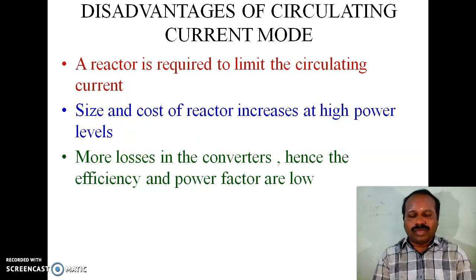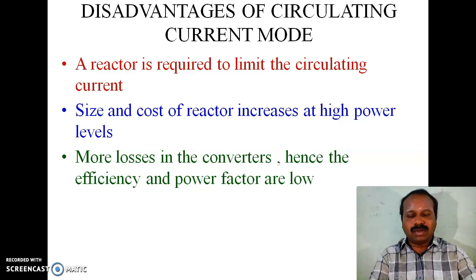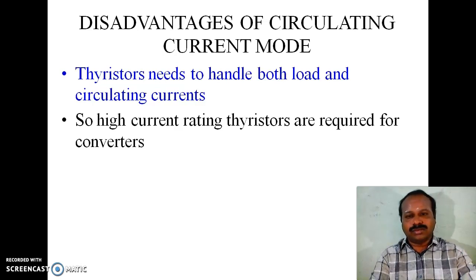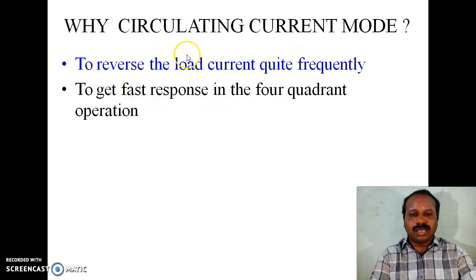Disadvantages of circulating current mode: a reactor is required to limit the circulating current, and its size and cost increase at high power levels. Moreover, losses are much higher in the converter, hence efficiency and power factor are low. Thyristors need to handle both load current and circulating current, so high current rating thyristors are required. Despite these disadvantages, dual converters are always operated in circulating current mode — to reverse the load current quickly and to obtain fast response in four quadrant operation.